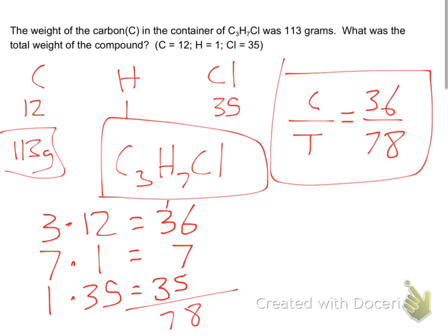But Mr. Konshak, we have a C and a T. We have carbon and total. If I want to use this, I need to fill one of those in. Yeah, I'll use 113 for what? Not T. For C, the carbon. Because in the very beginning it told us that we have 113 grams of that carbon. And it wants to know what is the total weight. So in this case, 113 over T is equal to 36 over 78. We will actually know the total weight of the compound.